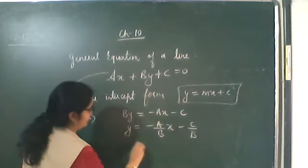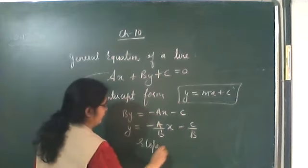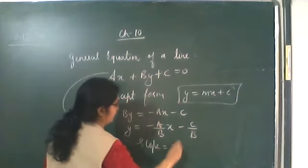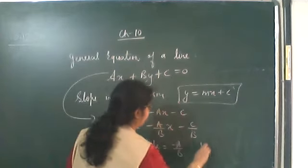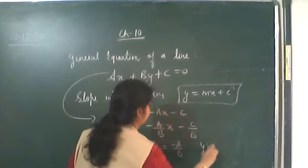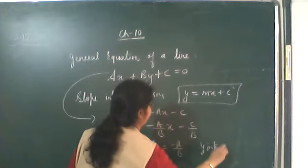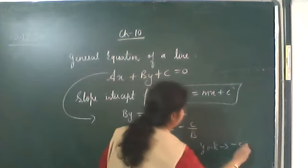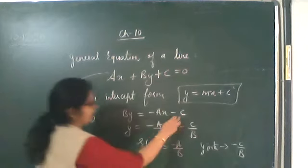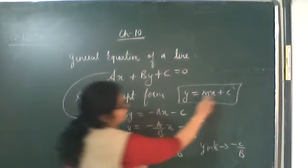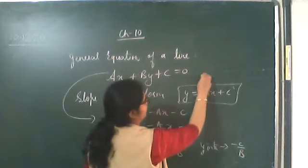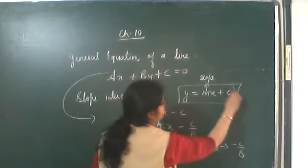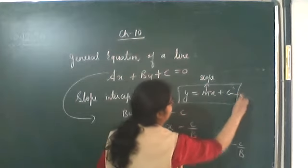From this you can say that the slope is minus a by b, and the y-intercept is minus c by b. In the equation y = mx + c, m gives you the slope and c gives you the y-intercept.